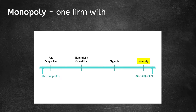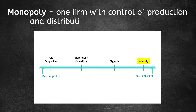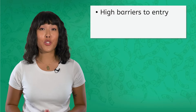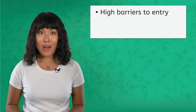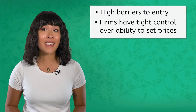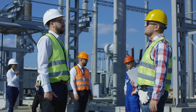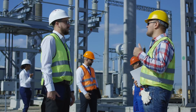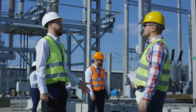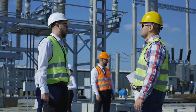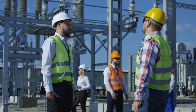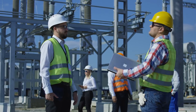In a monopoly, there is one firm with control over production and distribution of a good or service in a market. There are high barriers to entry, and firms in this type of competitive structure have tight control over the ability to set prices. A great example of a monopoly is the electric company. In most places, one company provides all of the electricity to the market. It is difficult for new firms to enter the market because it is expensive and time consuming to build the necessary infrastructure, which allows the company to set prices and fees for users.